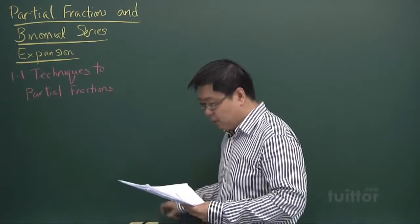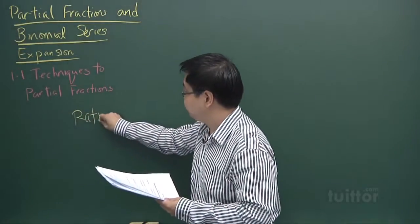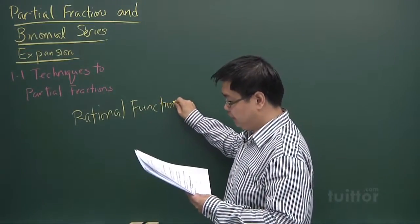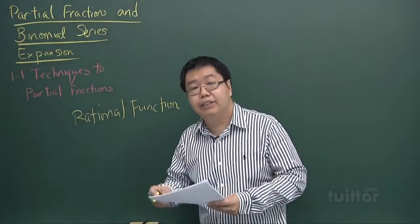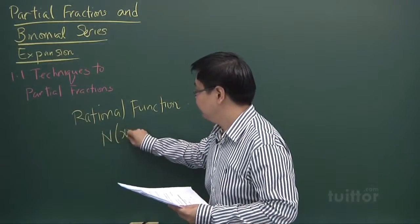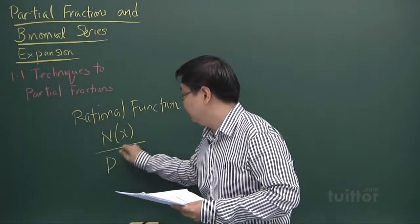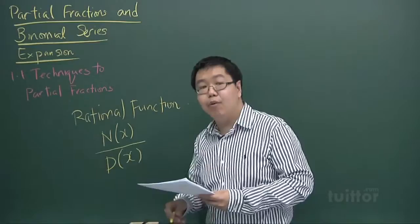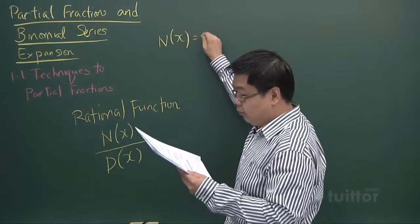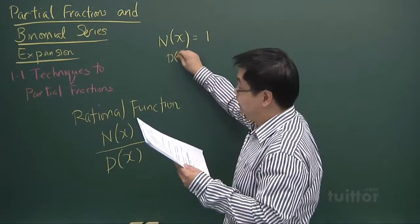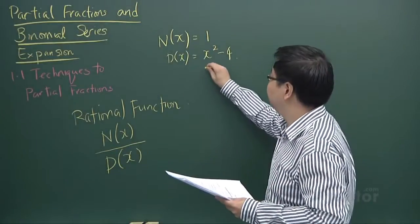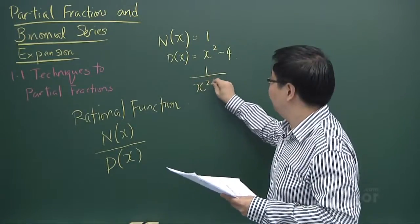Let's take a look at what is first meant by a rational function. A rational function is basically a fraction where the numerator, denoted by N(x), as well as the denominator, denoted by D(x), are both polynomials in x. For example, in your notes, N(x) equals 1 and D(x) equals x² minus 4, giving the rational function 1 over x² minus 4.